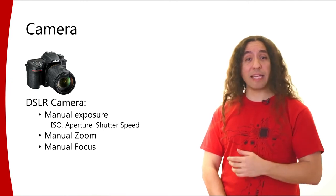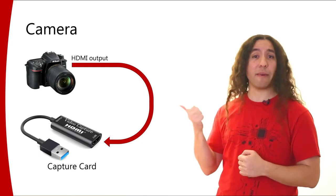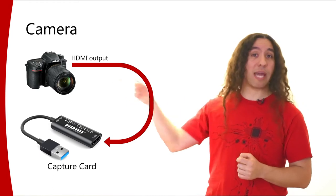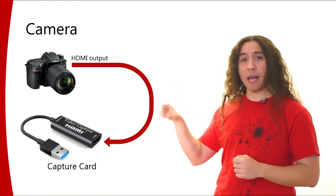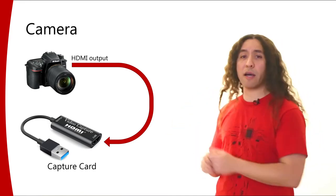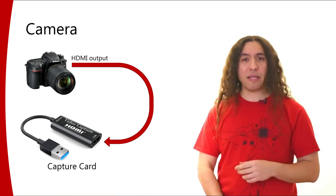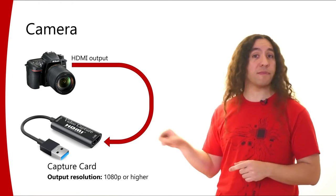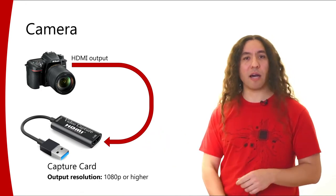In terms of getting image out of your camera, you can use the HDMI output if your camera supports it — and I would really recommend using a camera that has HDMI output. You can capture that HDMI output using a capture card. There are so many capture cards out there, and most of them would work. I would recommend getting a capture card that supports an output resolution of 1080p or higher, so you can get good enough video resolution.